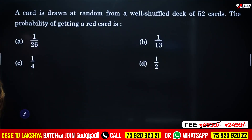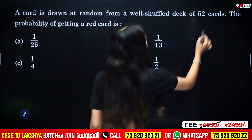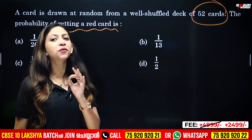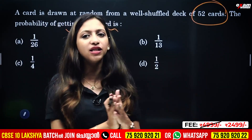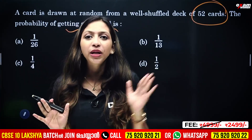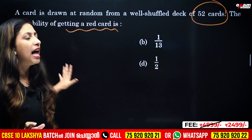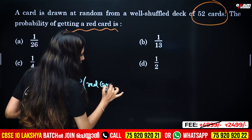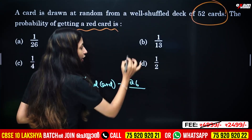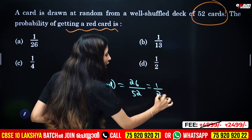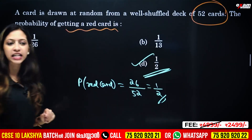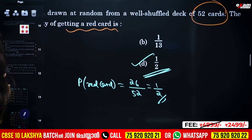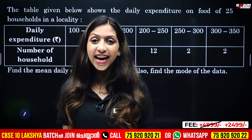Next question: a card is drawn at random from a well-shuffled deck of 52 cards. Find the probability of getting a red card. In 52 cards, there are 26 black cards and 26 red cards. The number of favorable outcomes is 26. So the probability of getting a red card is 26/52 = 1/2.